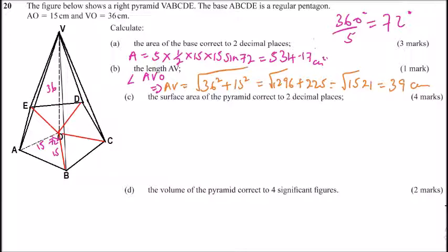We come to part c of the question. We are told to find the surface area of the pyramid, correct to two decimal places. We already have the area of the base. What remains is to find the area of the slanting triangles, the five of them, and add to the area of the base. How do we get the area?